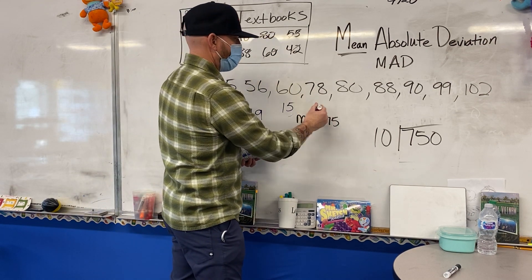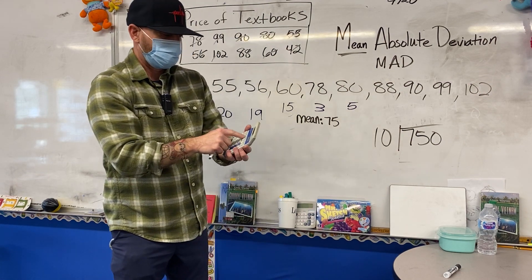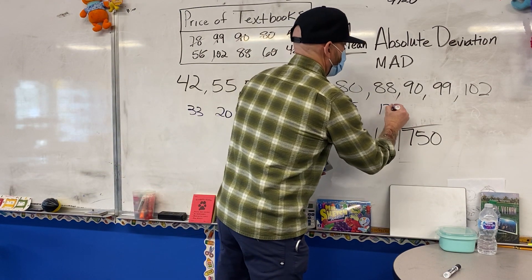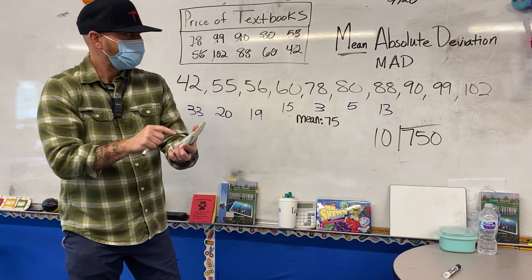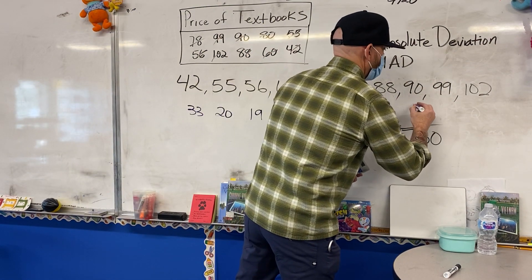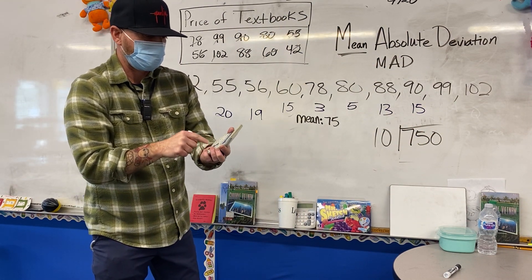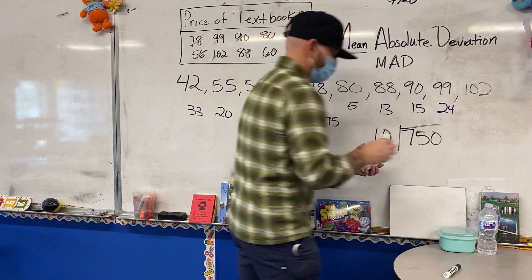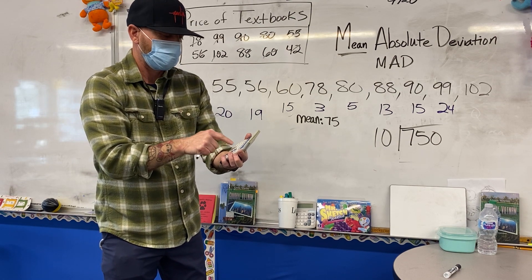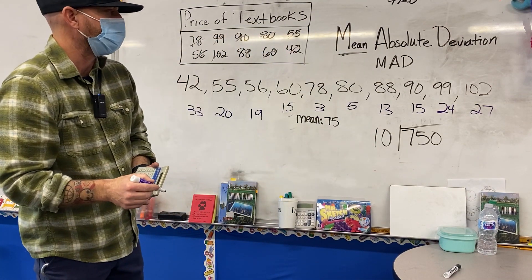78 minus 75 is going to be 3. 80 minus 75 is going to be 5. 88 minus 75 is going to be 13. 90 minus 75 is going to be 15. 99 minus 75 is 24 — it's okay to mental map it, I just want to make sure I'm doing it right. So 102 minus 75 is 27.